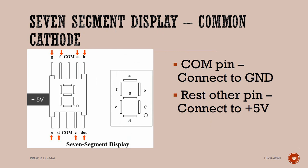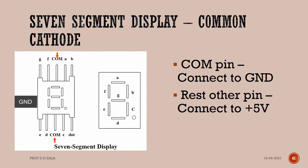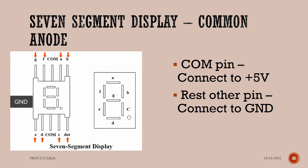In a common cathode seven-segment display, pins A, B, C, D, E, F, G, and dot must be connected to 5V. The two common pins must be connected to ground. The common anode display is exactly opposite.